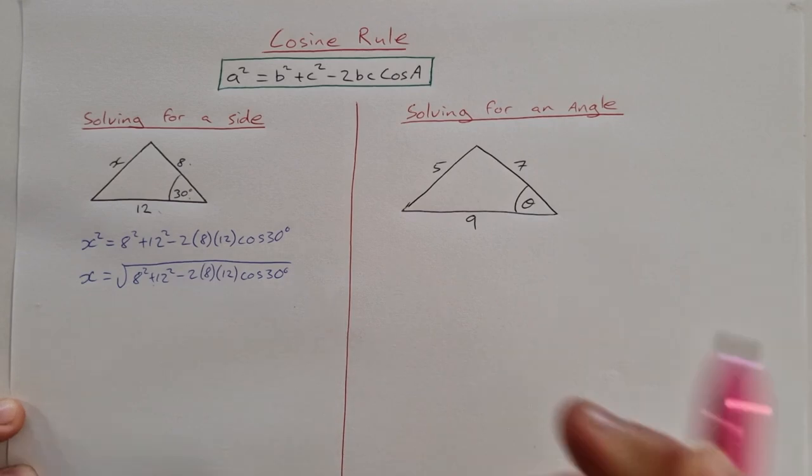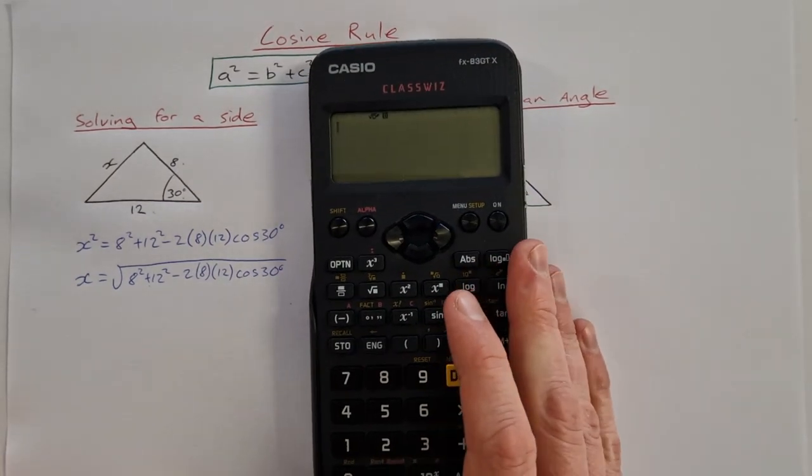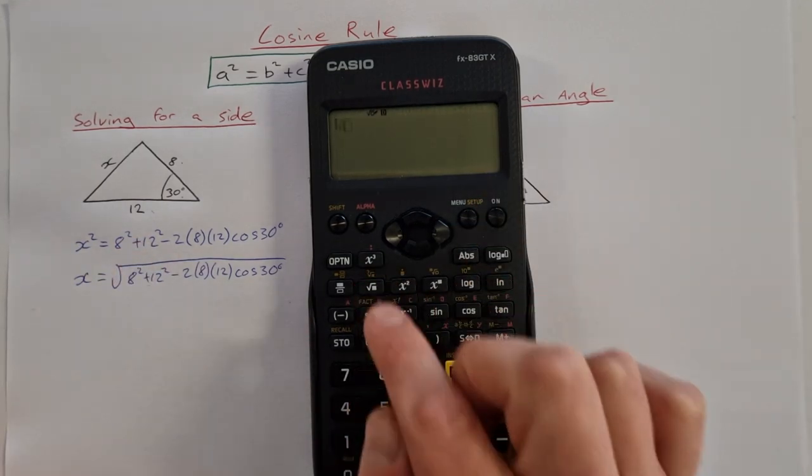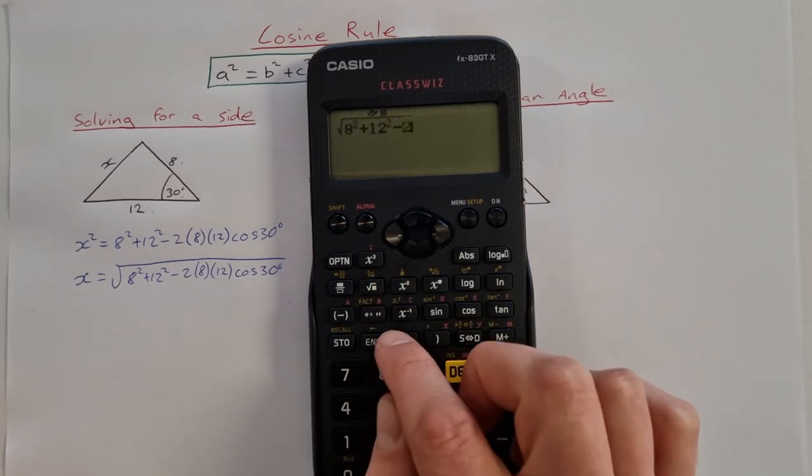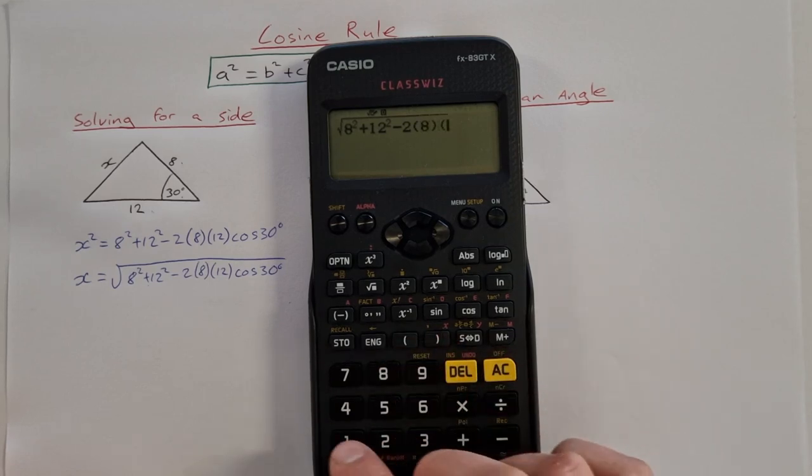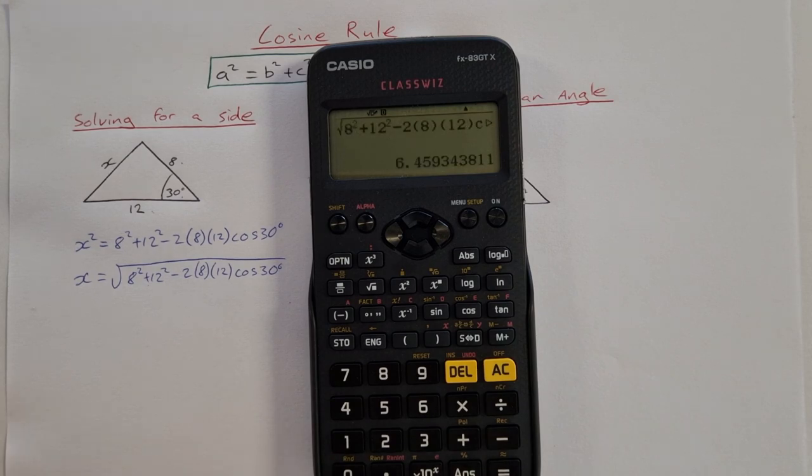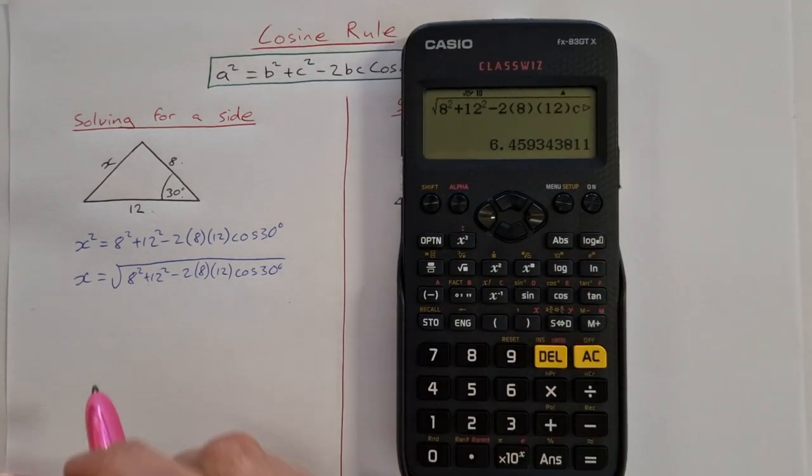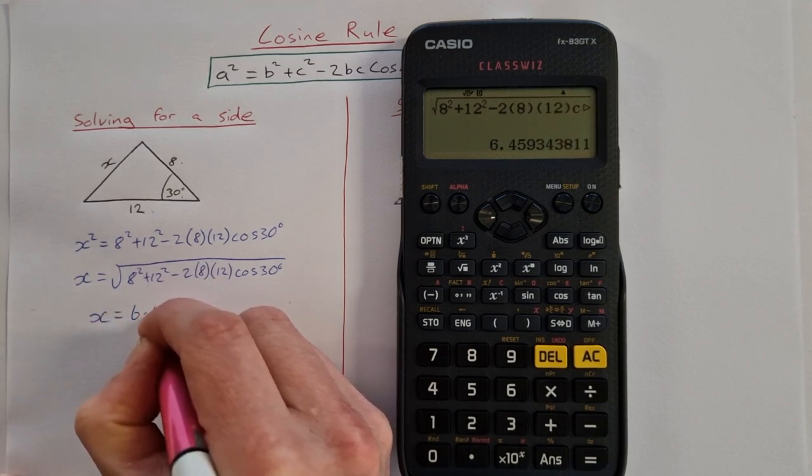And I can put that straight into my calculator now in one go without doing any calculations, without squaring the 8 or the 12 individually. So square root of 8 squared plus 12 squared minus 2 times 8 times 12 cosine 30. Close my brackets and I get 6.459. So I'm going to round that to two decimal places and say x is equal to 6.46.